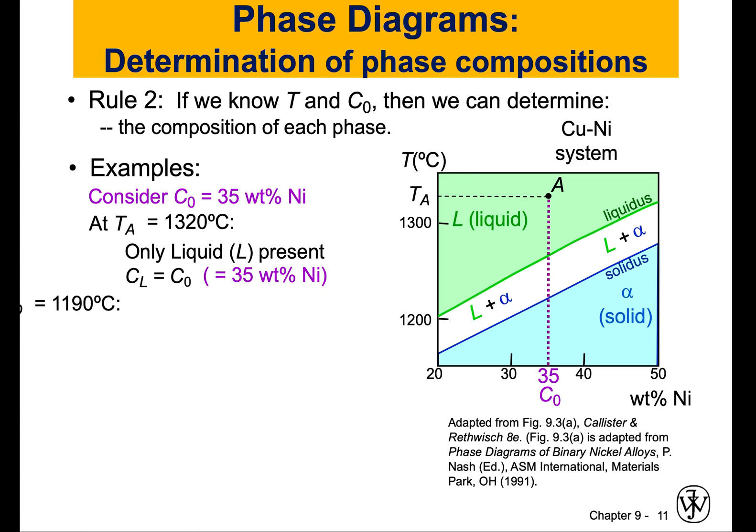Now let's do another example. Let's say I'm still at 35% nickel, but instead of my temperature being 1320 degrees Celsius, I am at 1190 degrees Celsius. I am now at point D, and point D is in the solid region. Again, it's one phase — a solid phase, the alpha phase. If my material is processed under these conditions, which is 1190 degrees Celsius and 35% nickel, I'm in the solid state. So what is the composition of that phase? It is still 35% nickel and 65% copper. Very simple. If you have only one phase, whatever the composition you have is the composition of your material.